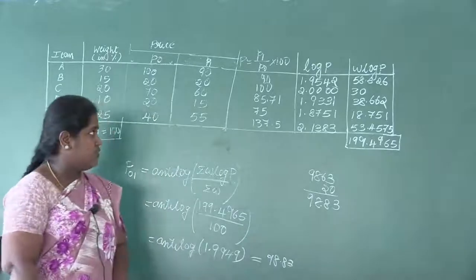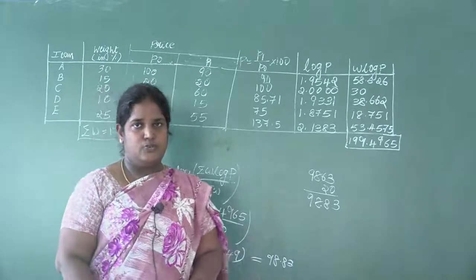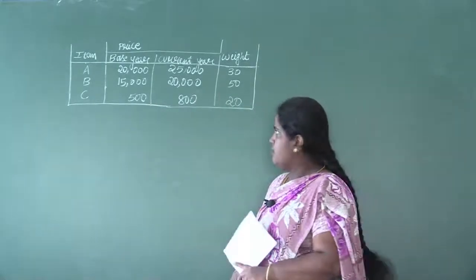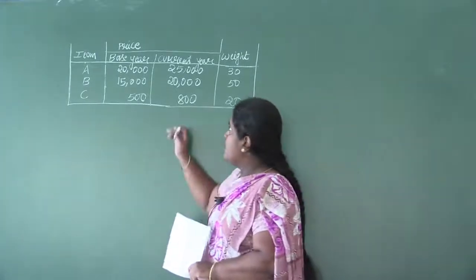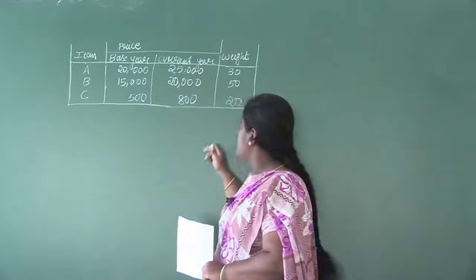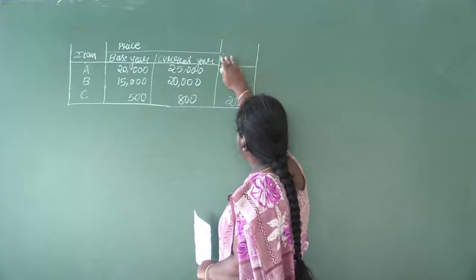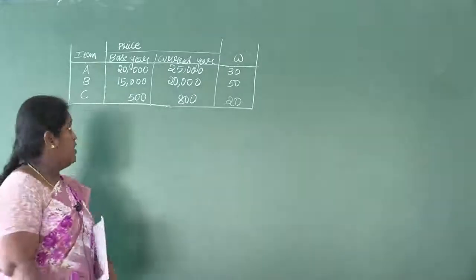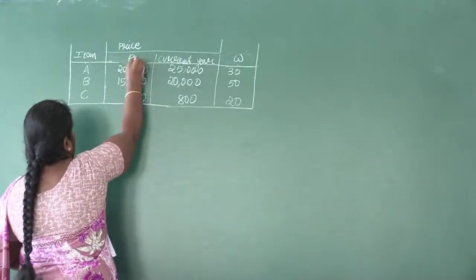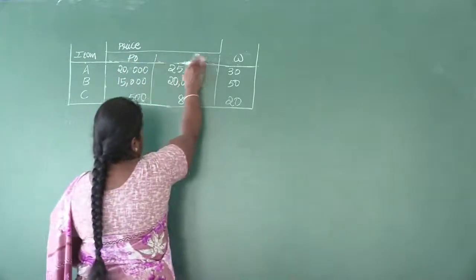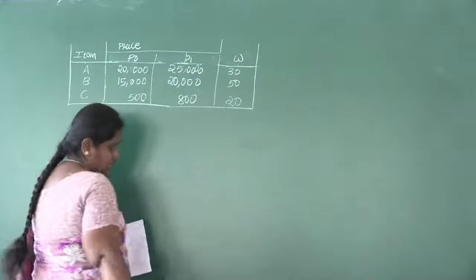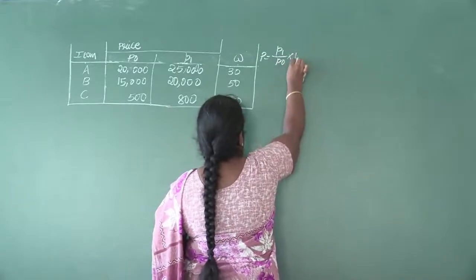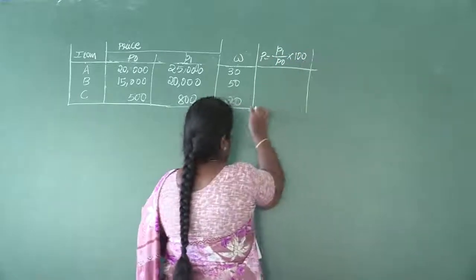There is no need to write a conclusion for geometric mean — no marks are given for that. Moving to the next problem: calculate weighted geometric mean price index number. Items are up to C. Price is divided into base year and current year. Weight is denoted by W; base year price by p₀, current year price by p₁. We calculate price relative P = p₁ ÷ p₀ × 100.